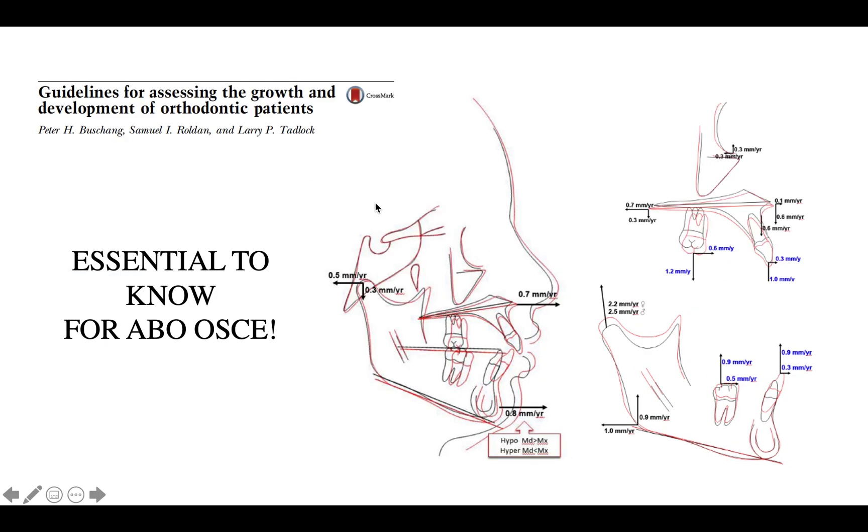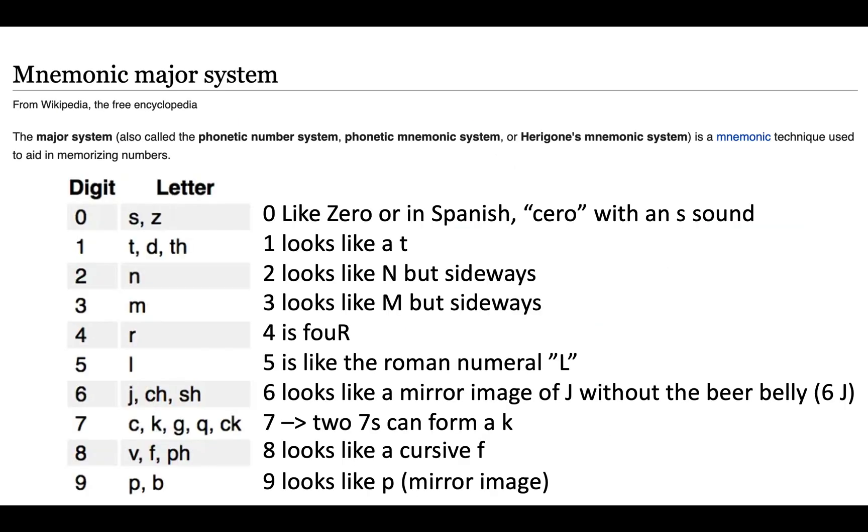Hey guys, so if you are taking the ABO OSCE, this is something that is essential to know. This is from the article titled The Guidelines for Assessing the Growth and Development of Orthodontic Patients. It's the article by Dr. Bouching and it describes the normal average growth and development of the skeletal and the dental changes. As you can see there's a lot of numbers to memorize and it's almost impossible to memorize this from one glance.